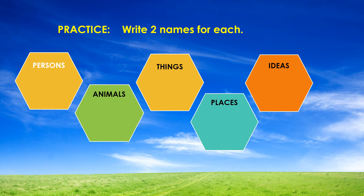To practice more on nouns, do this activity: give two examples of nouns for each kind — two examples for names of persons, two for names of animals, two for things, two for names of places, and two for names of ideas.